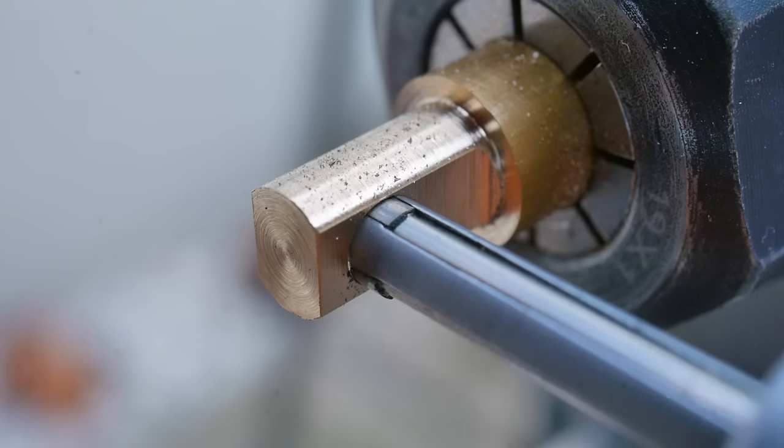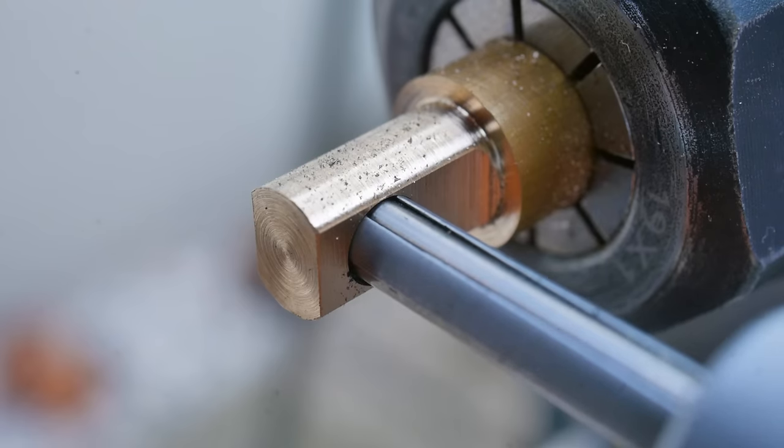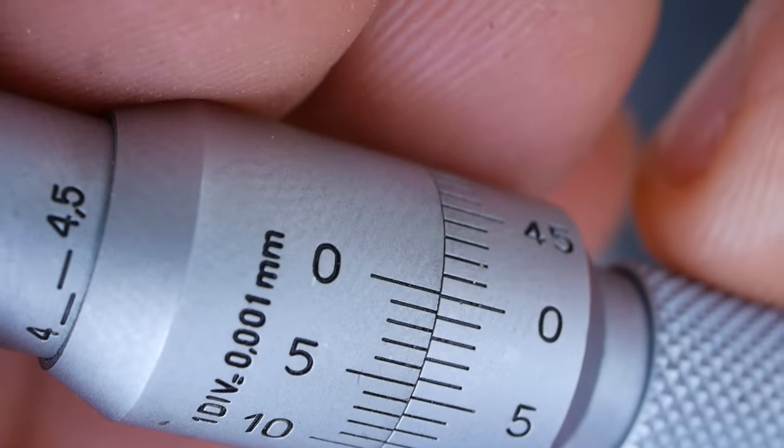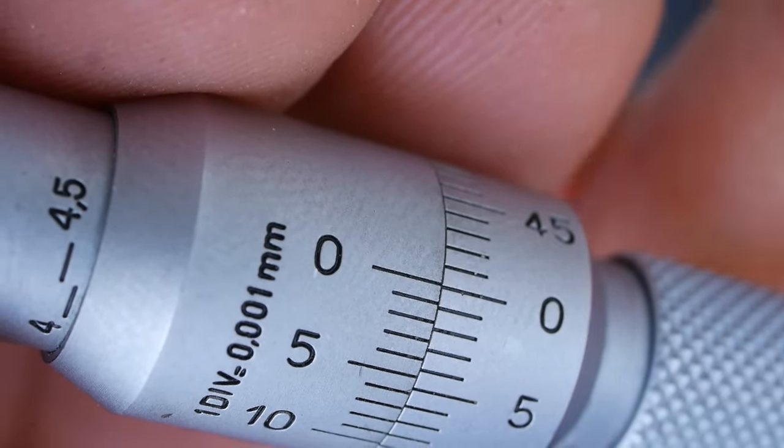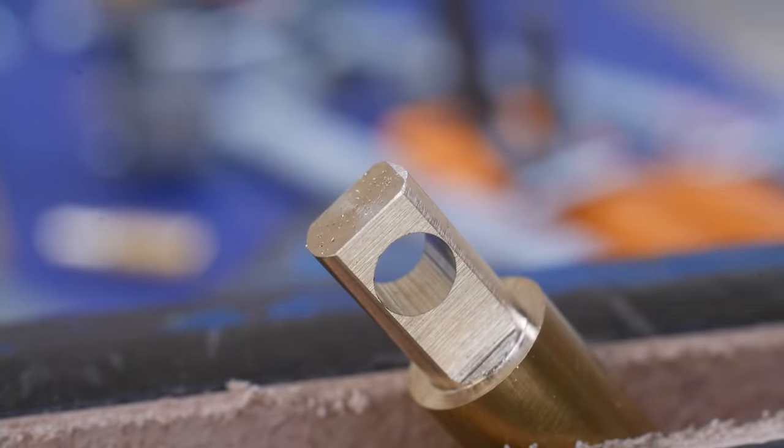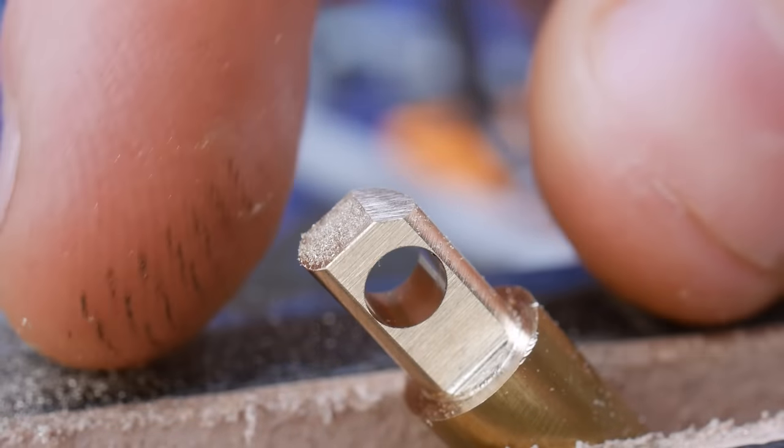I machine the bore for the bearings by just plunging straight in with an end mill. As you can see with the ball micrometer, this produces a hole 1 micron shy of 4mm, which should produce a perfect press fit for the ball racers.